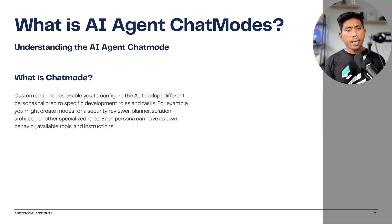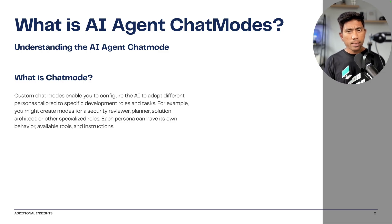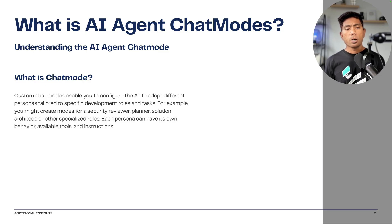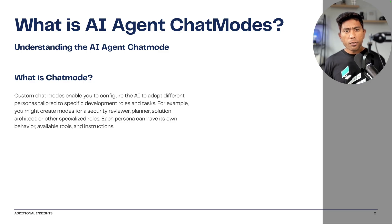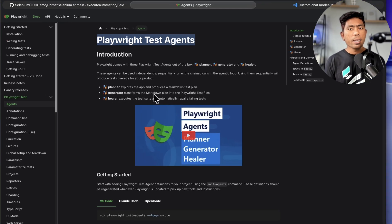First, let's understand what exactly AI agent chat modes are. Chat modes are an ability to create your own custom agents with the power of GitHub Copilot, where these custom chat modes enable you to configure the AI to adapt different personas tailored to specific development roles and tasks. In our case, we're going to convert existing Selenium tests to Playwright tests, so we can create a chat mode with an agent specific for this operation.